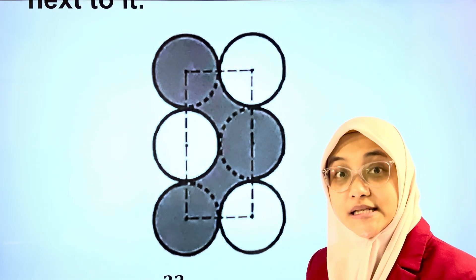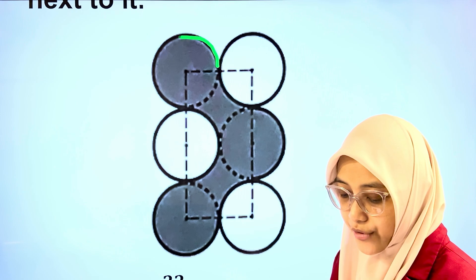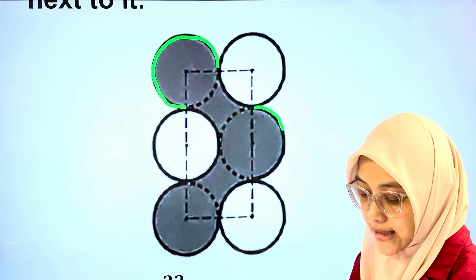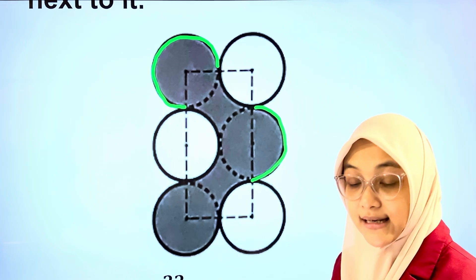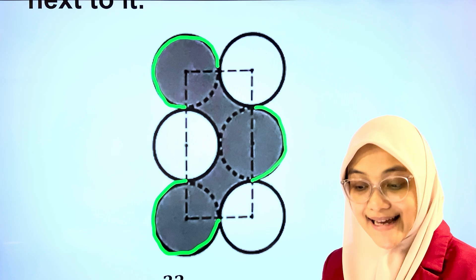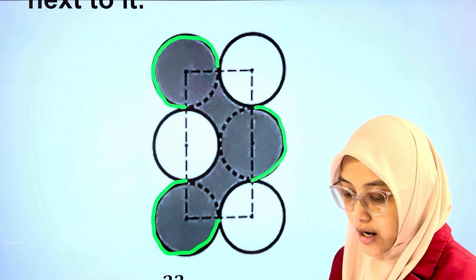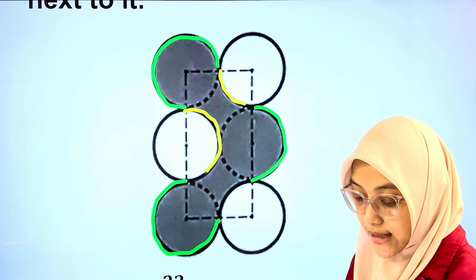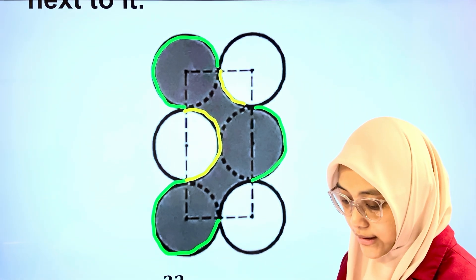The perimeter of the shaded part consists of a 3 quarters circle, a semi-circle and another 3 quarters circle. In addition, we have a quarter circle, a semi-circle and another quarter circle.